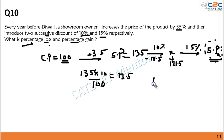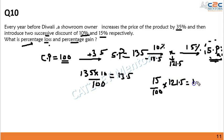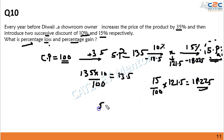Now I calculate 15% of 121.5, which is 18.225. Subtracting 18.225 from 121.5, I get the actual selling price as 103.275 rupees.